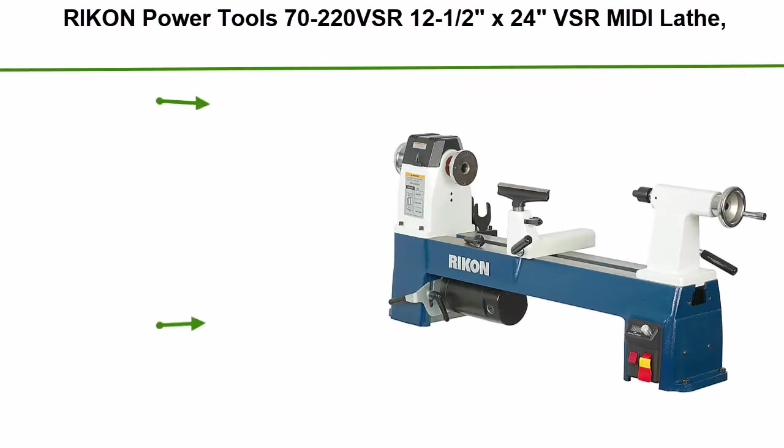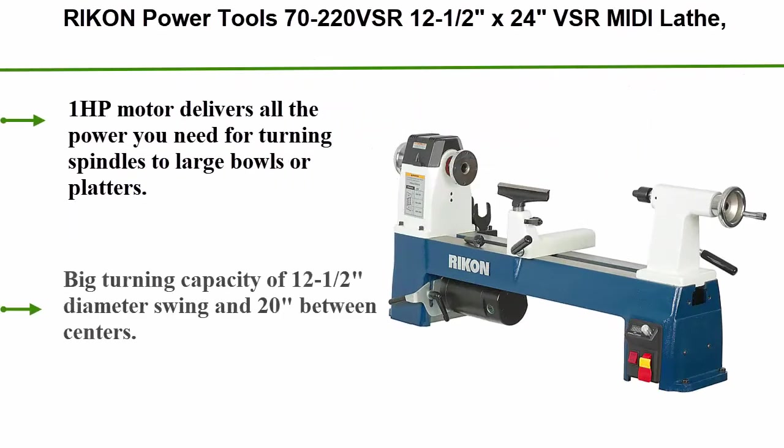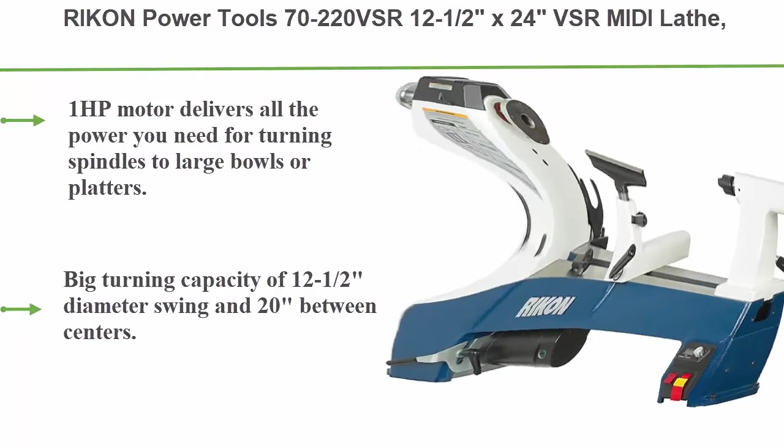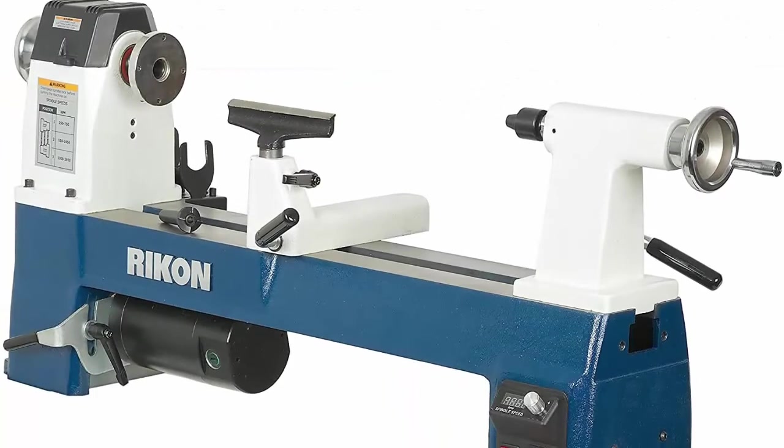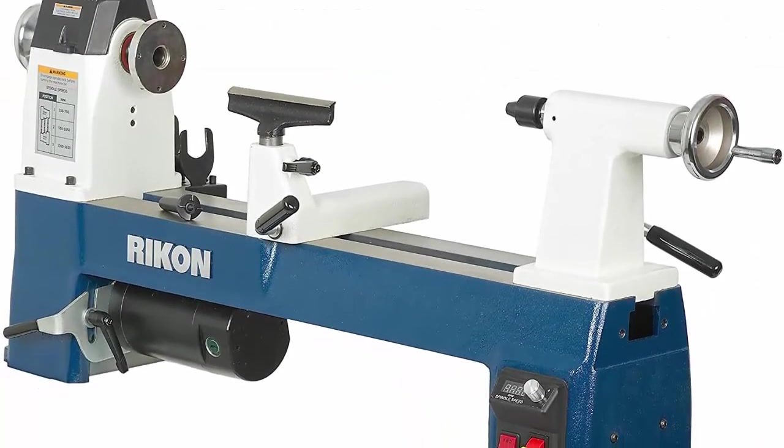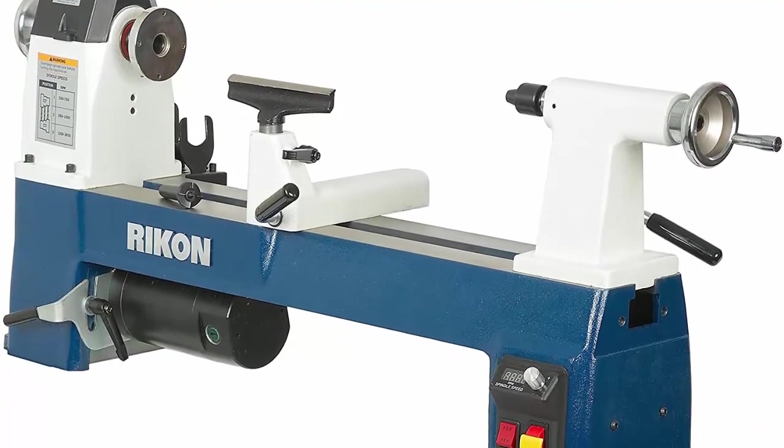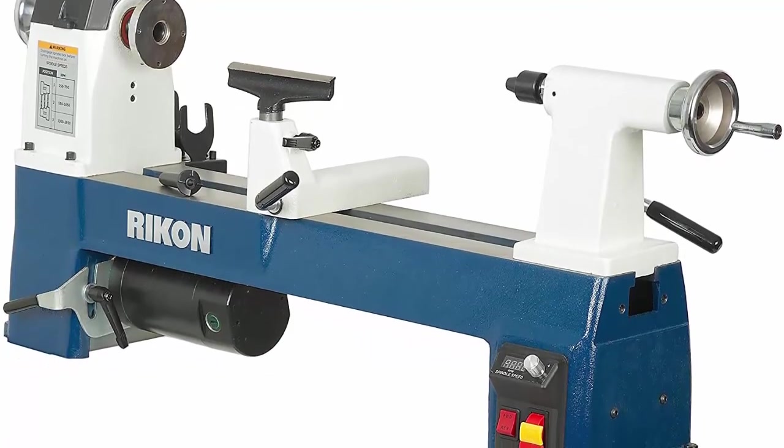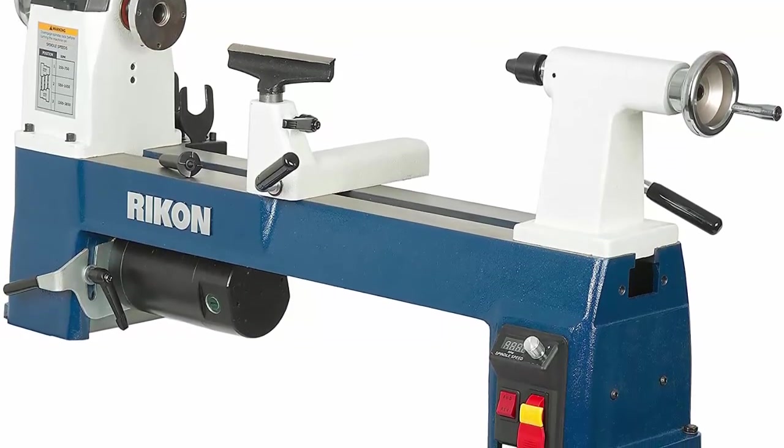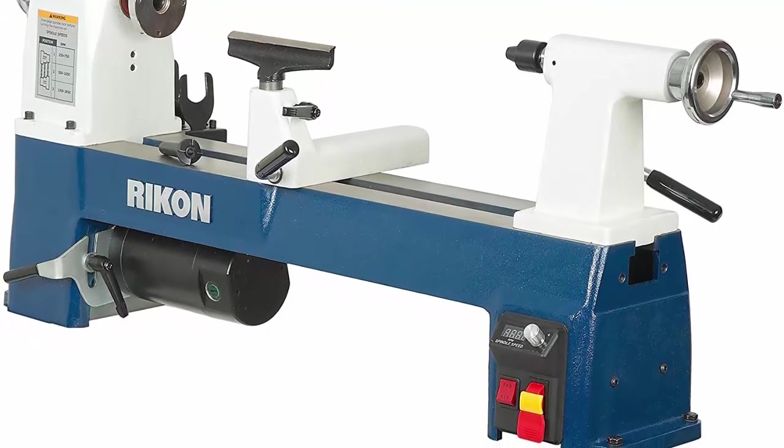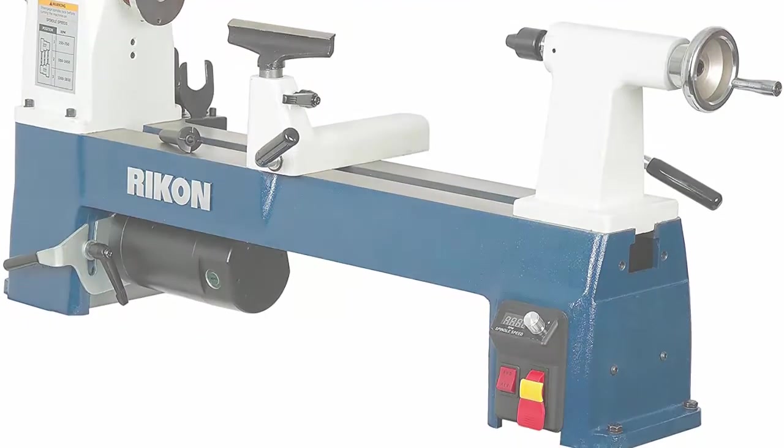Top 1: RIKEN POWER TOOLS 70-220VSR, 12.5x24VSR midi lathe. 1 HP motor delivers all the power you need for turning spindles to large bowls or platters. Turning capacity of 12.5 inch diameter swing and 20 inches between centers. 24-position index head allows accurate pattern or design work on projects. Electronic variable speeds 250 to 3,850 RPM with LED display and forward/reverse functions.